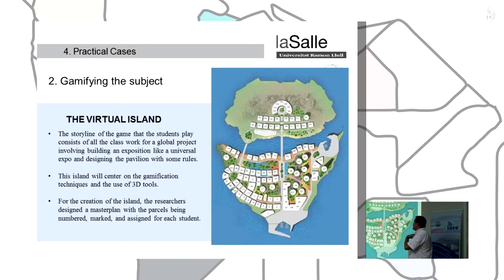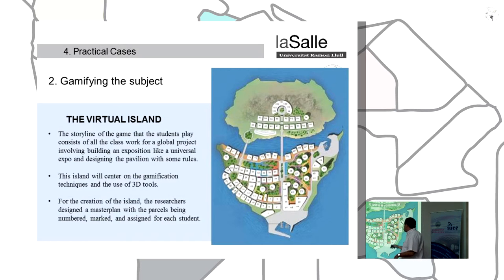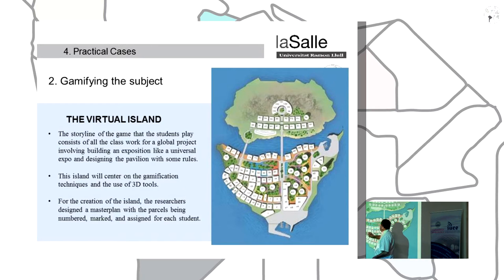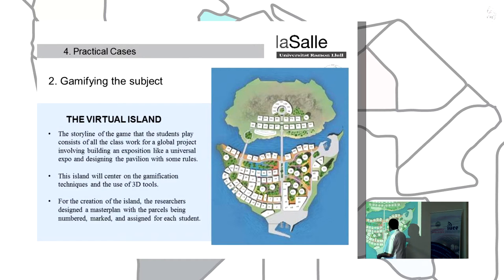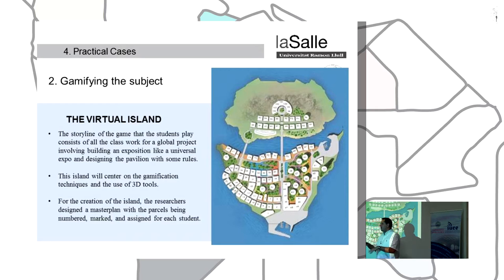The faculty teachers made something like this: a scenario resembling an island. The students need to choose one of the locations on the island, and in that location they will place their house. Finally, they navigate inside this context to view the other students' houses.